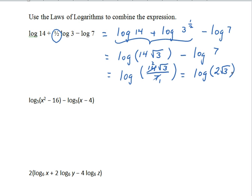In the second example, we don't have any coefficients that are not 1, but we do have a product that can be factored in the first argument. It's log base 5 of the quantity x squared minus 16, minus log base 5 of the quantity x minus 4. So we will first factor x squared minus 16 as x plus 4 times x minus 4.